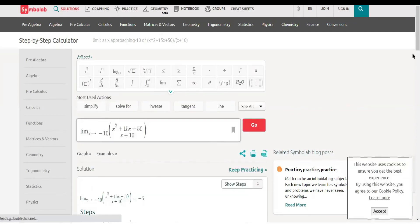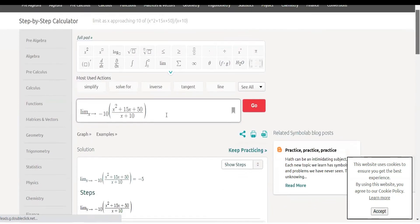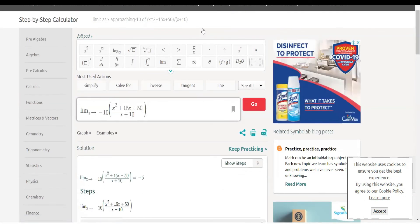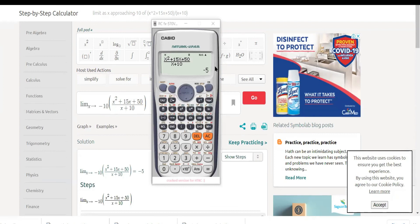We get to our negative 5. See there, we'll get to our negative 5, negative 5, just like in our calculator. Just like our calculator, we got negative 5 for the limit. Easy, so we can do it with our calculator.